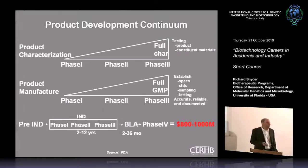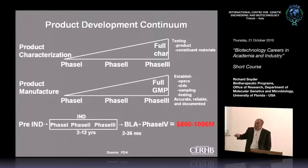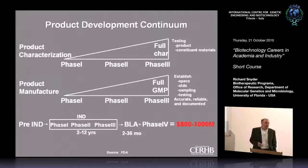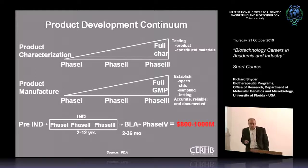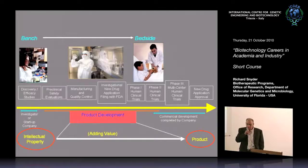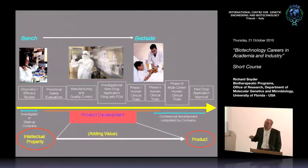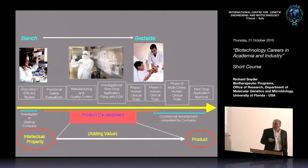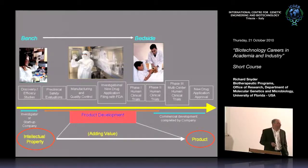This whole process takes about a decade from pre-IND through clinical trials to get a biologic license application approved to sell products — it takes about a billion dollars. As you move from discovery toward a new drug application, the value of the intellectual property that you've invented becomes more and more valuable. If you identify a gene, it cures cystic fibrosis in a mouse model, you patent that gene — the further you move along this line showing safety in animals, manufacturability, and efficacy in humans, the value of that invention goes up by orders of magnitude.